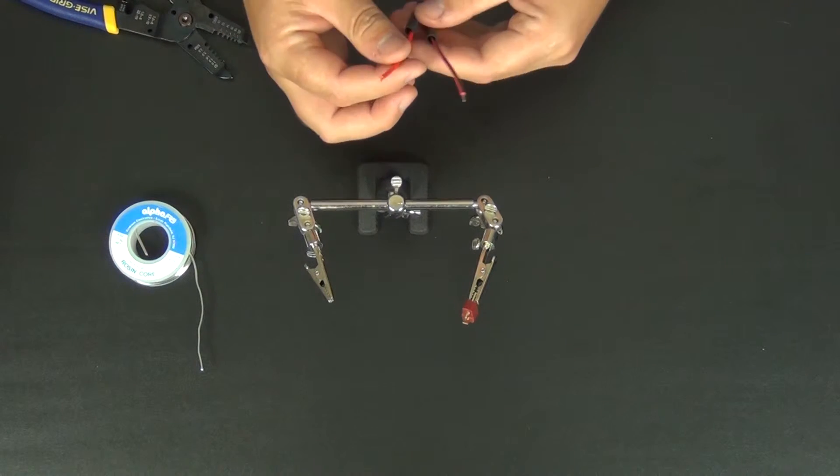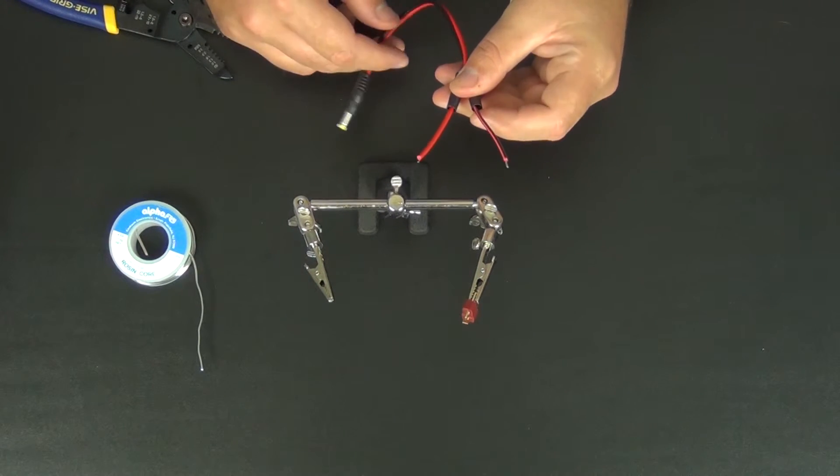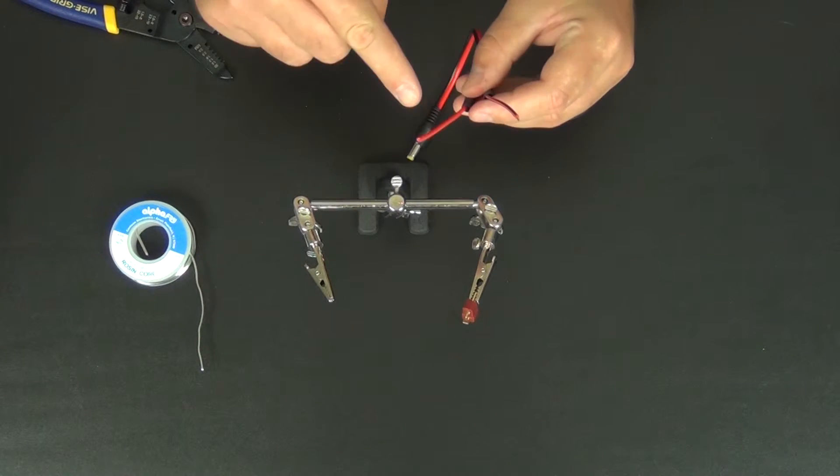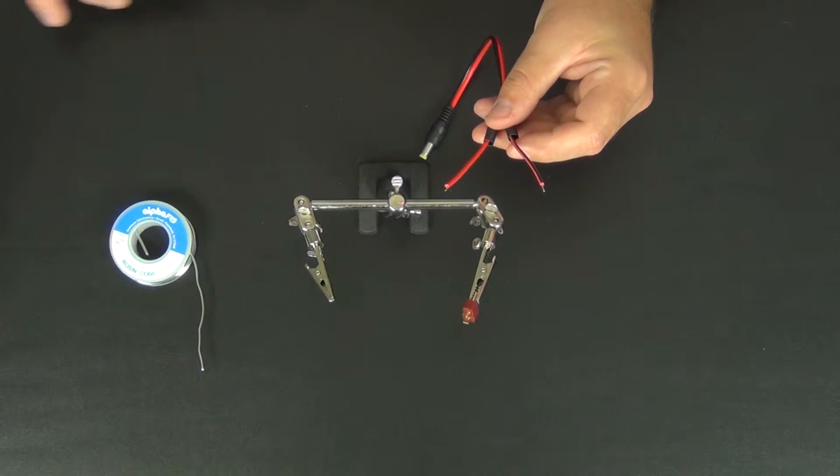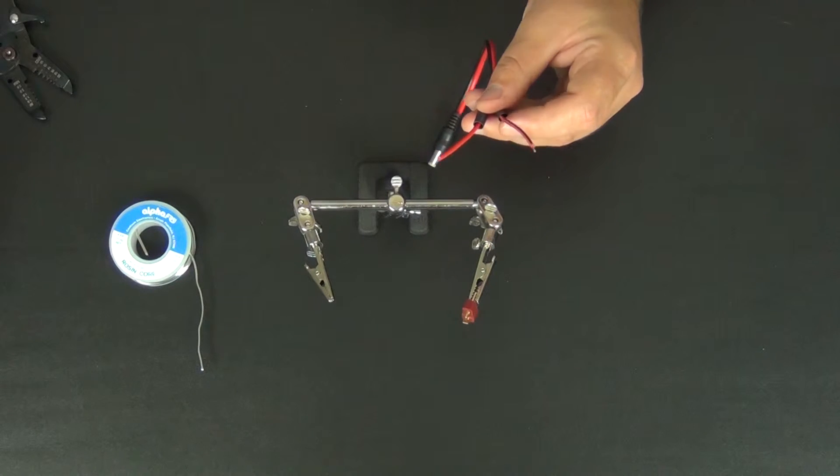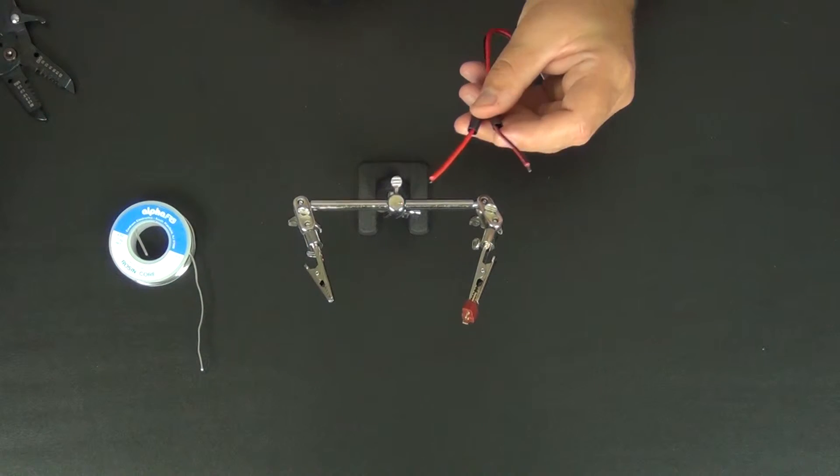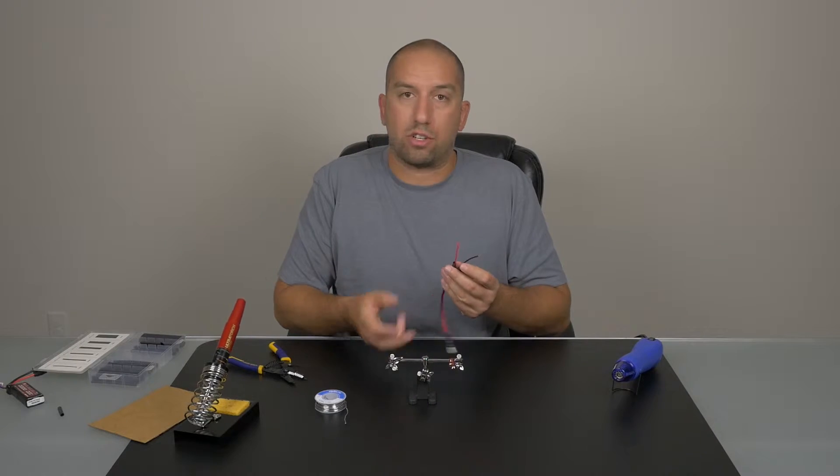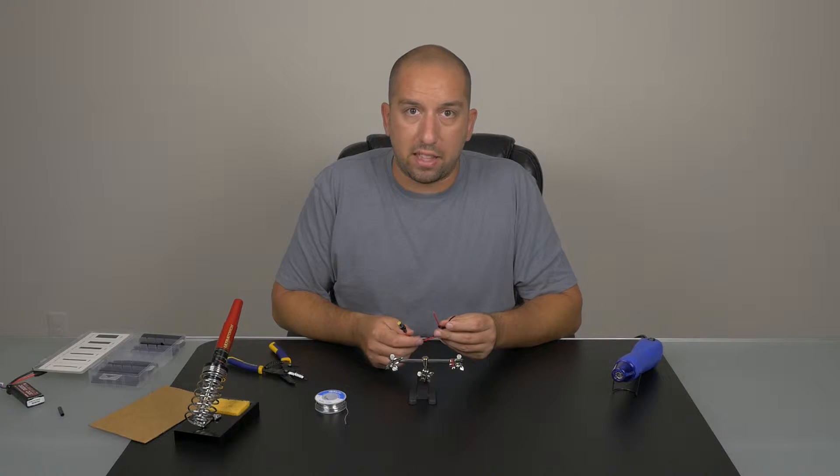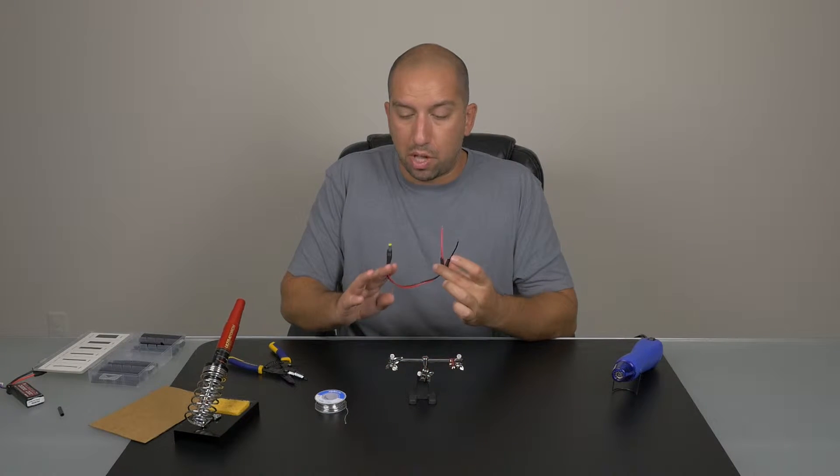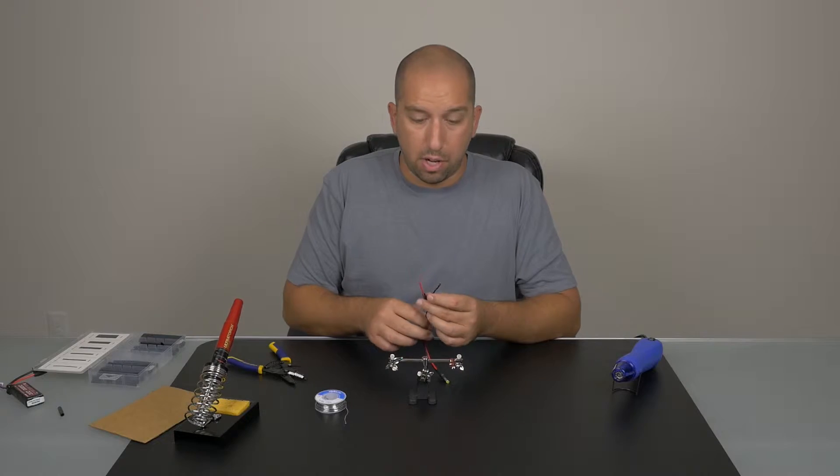So the thing to point out is that these adapters came pre-tinned. So there's a little bit of solder on the tip of each of these wires. And what's nice about that is that we don't have to do it. But you would need to tin these if you are making these plugs or if you're reusing them, taking them off something else. The link for these plugs are in the description of the video below.